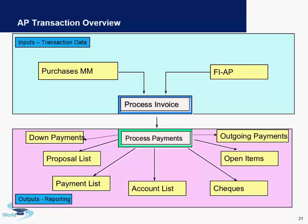Another output will be an account list, which gives you a summary of a particular vendor's account — what items are pending to be paid, etc. You will also find things like proposal list and payment list, which we will look into in detail when we discuss payments going forward. You can also have a summary of all the down payments already made to the vendor in the past. Finally, you will see open items — open items are those accounts which are not yet paid.